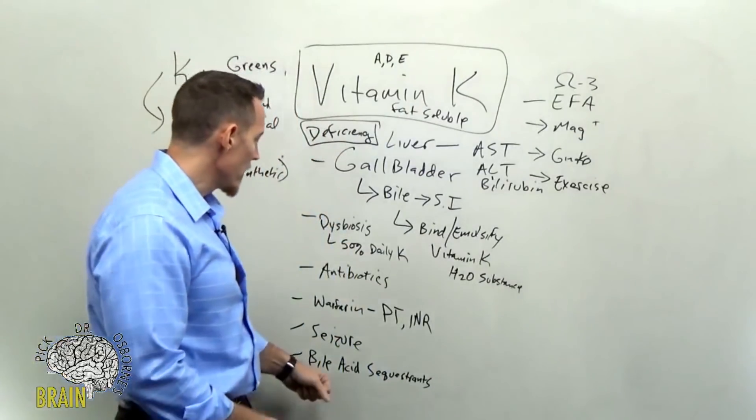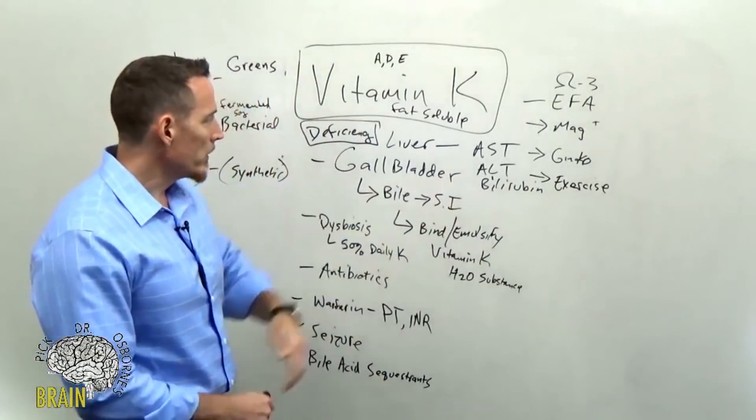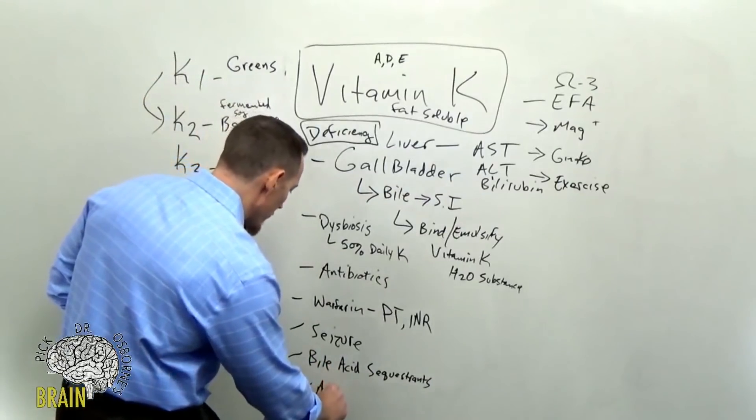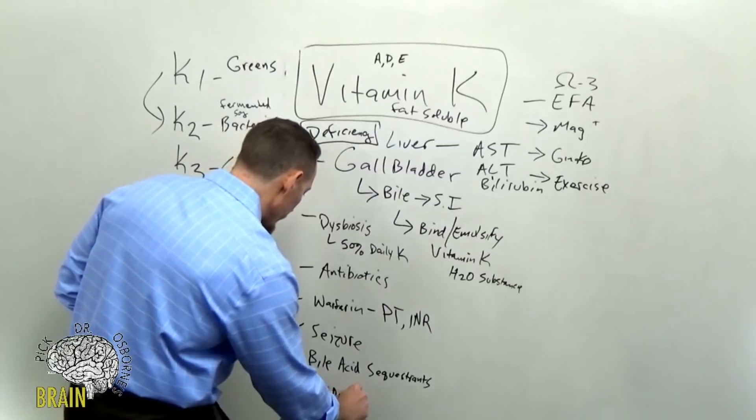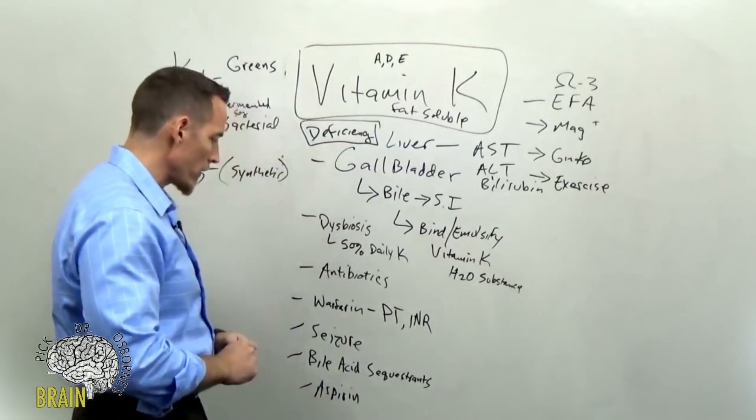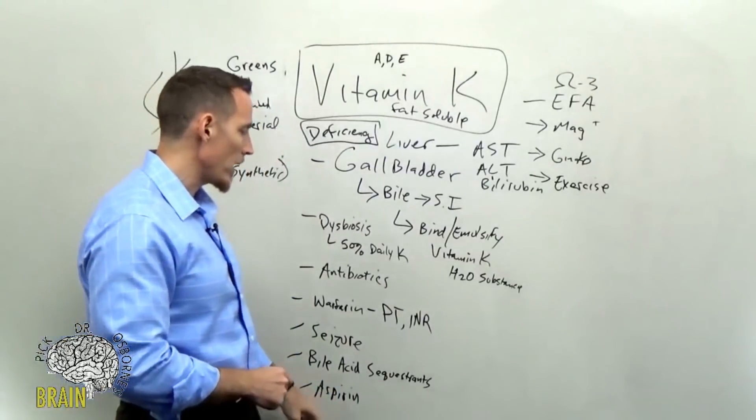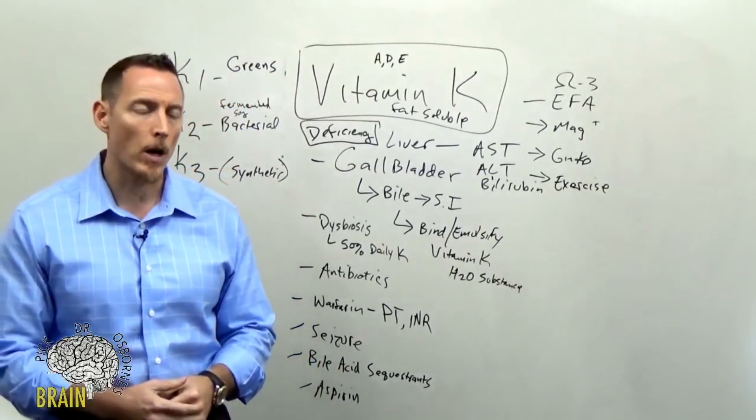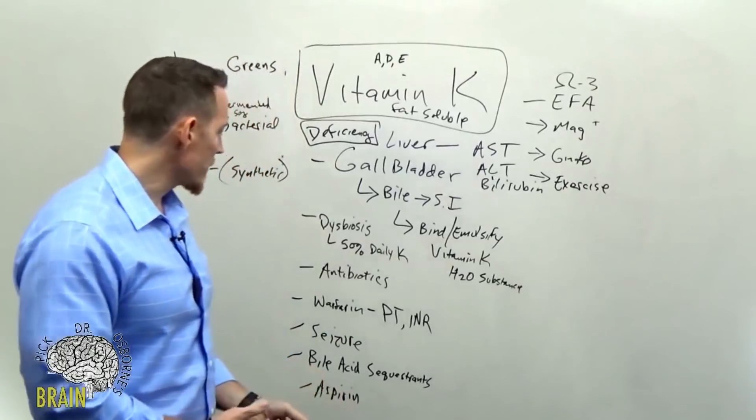Other things that can bind or interfere—we mentioned earlier aspirin. Aspirin can interfere with blood clotting, and so it's one of those that oftentimes gets used as a blood-thinning agent, but it's been shown to can interfere with vitamin K as well.